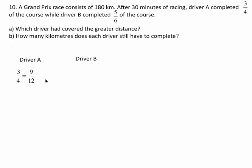So driver A went nine-twelfths. Driver B went five-sixths. Six goes into twelve twice, so I'm going to multiply the five times two to get ten. So five-sixths is ten-twelfths. Clearly, driver B went further. Driver B went ten-twelfths of the way around the track, and driver A only went nine-twelfths, so driver B has gone the greatest distance. That's one way of doing it.